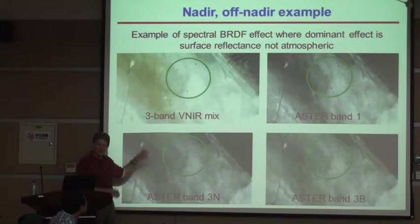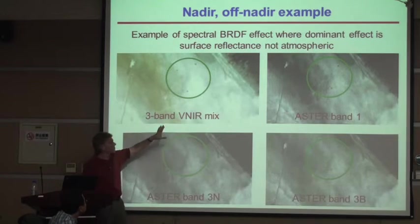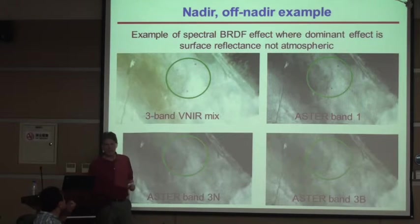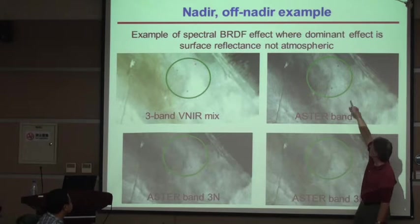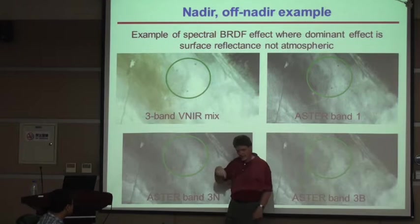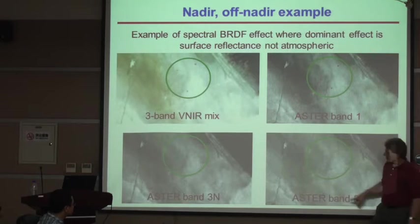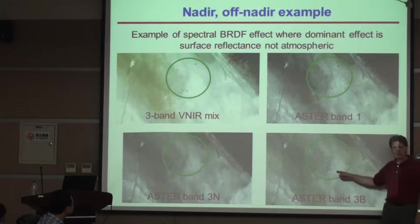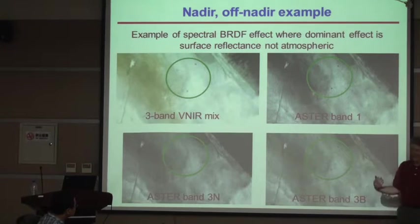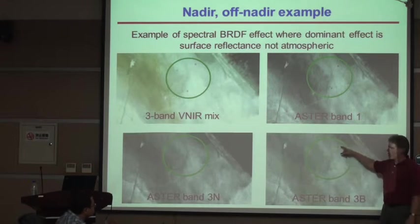A three-band near-infrared color composite for the ASTER sensor, with three tarps marking out the test site. In ASTER band 1, the tarps show up very clearly. Going to ASTER band 3N, which looks straight down, there are no tarps visible. Then in band 3B — which looks backwards at 23.5 degrees — the tarps show up again.